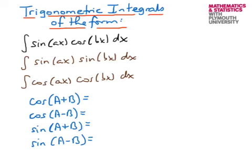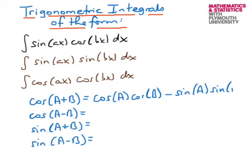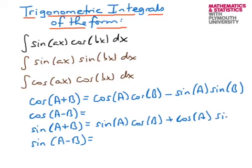Welcome back. The results we have are: the cosine of a plus b is the cosine of a multiplied by the cosine of b, minus the sine of a multiplied by the sine of b. The other key relation is the sine of a plus b, which is the sine of a multiplied by the cosine of b, plus the cosine of a multiplied by the sine of b. These are the two key formulae.